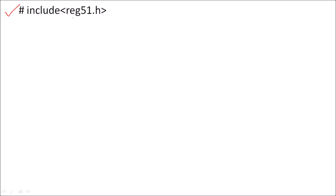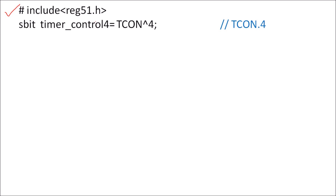When writing the program in Keil software using the Keil compiler, the first step is to include the file reg51.h. After including this file, whenever you want to use a single bit — for example, TCON.4, which is used to start Timer 0 — you must declare it. To start Timer 0, we initialize TCON.4 with logic 1.